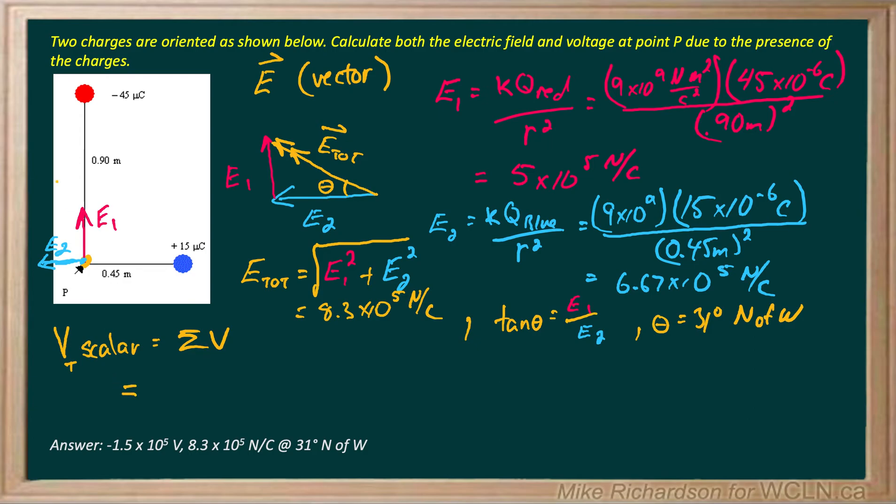So for a point charge the voltage due to the red negative 45 microcoulomb charge will be K times Q red, but instead of divided by R squared it's just divided by R, and you put in the sign of the charge when you do anything that's scalar. So plus K Q blue all over the distance from the blue charge.